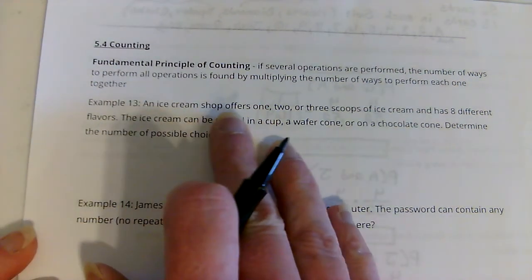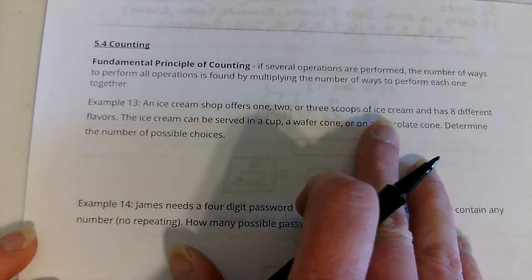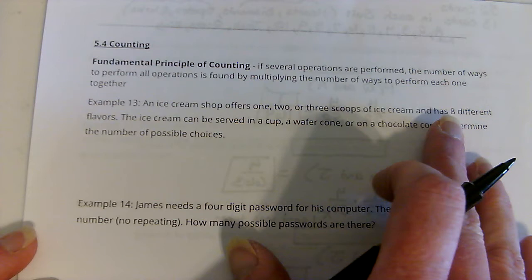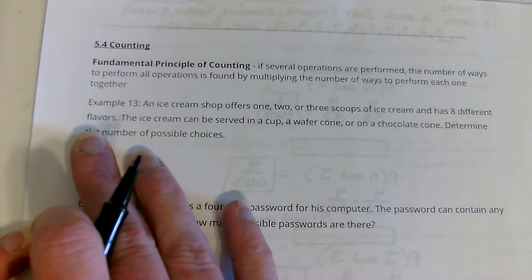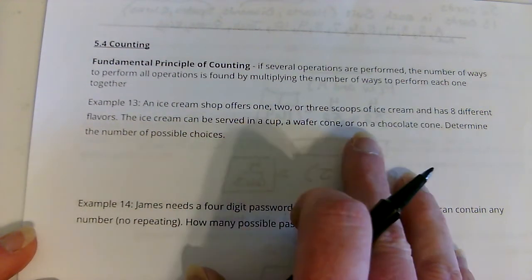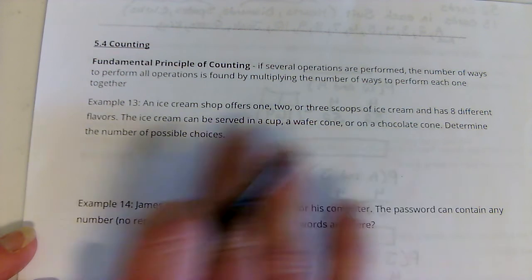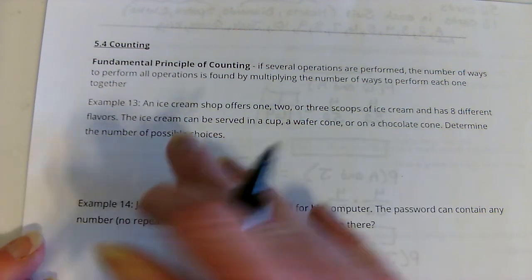An ice cream shop offers one, two, or three scoops of ice cream, has eight different flavors, and they can serve it in a cup, wafer cone, or a chocolate cone. How many number of possible choices do we have?